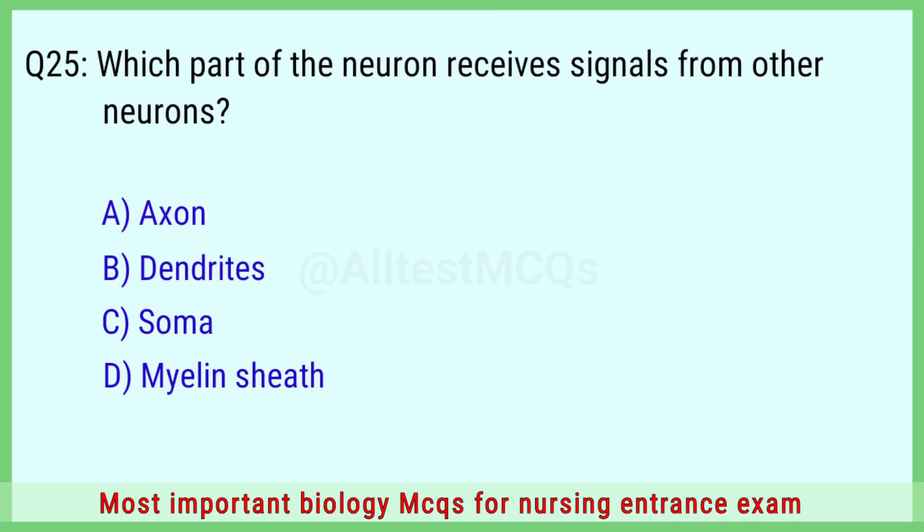Question number 25: Which part of the neuron receives signals from other neurons? The right answer is option B: dendrites.